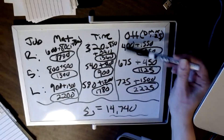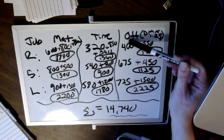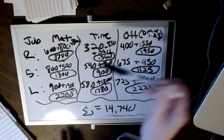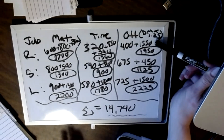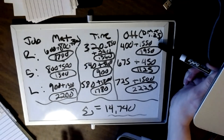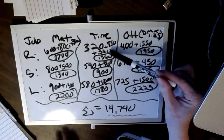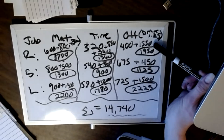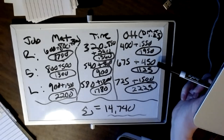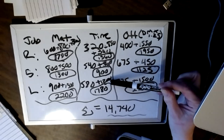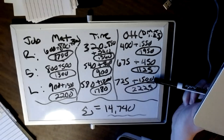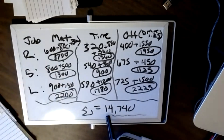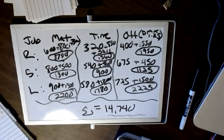The beginning overhead balances of $400, $675, and $725 came from the previous month. For this month's overhead we took the new labor charges and multiplied by 1.25. For Rogers: ($850 + $390) × 1.25 = $1,550. Stevens: $360 × 1.25 = $450. Linton: $1,200 × 1.25 = $1,500. Adding all of those together gave a grand total of $14,740.